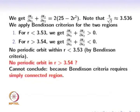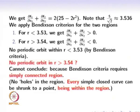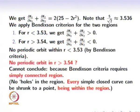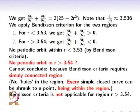We cannot conclude in this case because Bendixon criteria requires a simply connected region. A simply connected region is one with no holes — if we take a simply closed curve in that region and shrink it to a point, it should remain within the region throughout the shrinking. Therefore, Bendixon criteria is not applicable for the region R > 3.54, since that region is not simply connected.